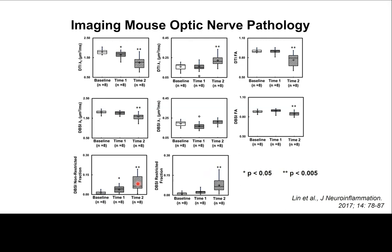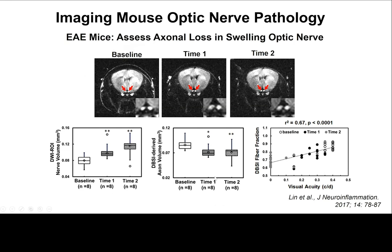Looking at the inflammatory component: we see significant vasogenic edema increases at onset and gets worse at the second time point. And you can see cellularity increase — insignificant at the first time point but showing a trend — and by the second time point, a most significant increase.